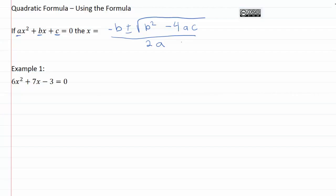Twelve years ago when I first learned this equation, I had it sung to me and it helped me memorize it a lot. So I'm going to sing for you. Here we have the quadratic formula: x equals negative b plus or minus the square root of b squared minus 4ac, all over 2a.